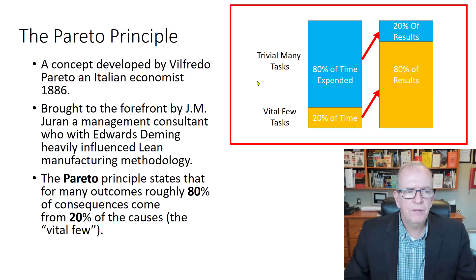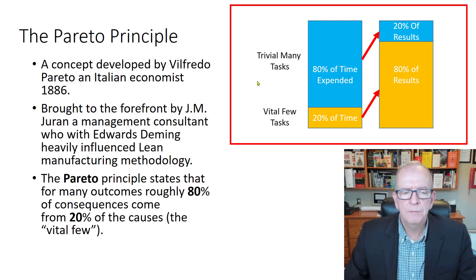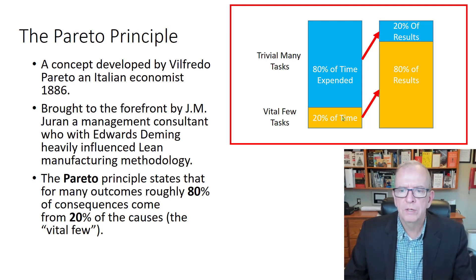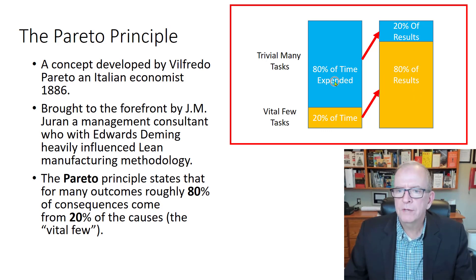It can be thought of in a number of ways. The Pareto Principle states that for many outcomes, roughly 80% of the consequences come from 20% of the causes. So if you look at this chart, you can see that 20% of your time results in 80% of the results, while 80% of time expended yields only 20% of results.